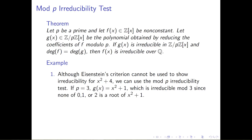Because reducing modulo 3 didn't lower the degree, f of x and g of x have the same degree. We can use this theorem to conclude that x squared plus 4 is irreducible over the rational numbers. Pretty cool thing going on with this mod p irreducibility test — we can switch into working with finite fields, which has the distinct advantage of letting us do fewer computations.